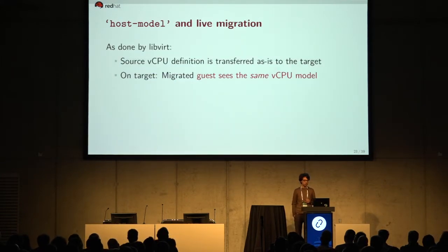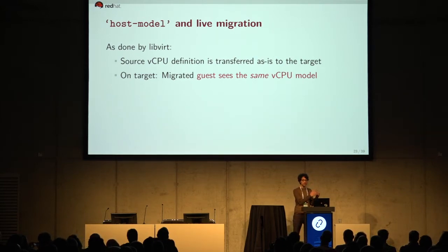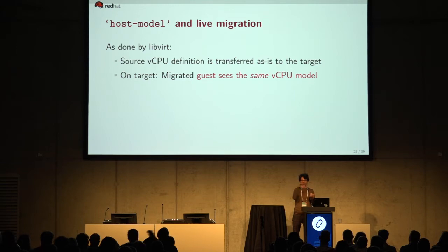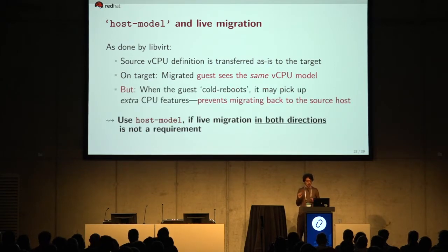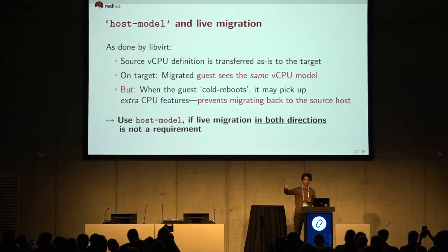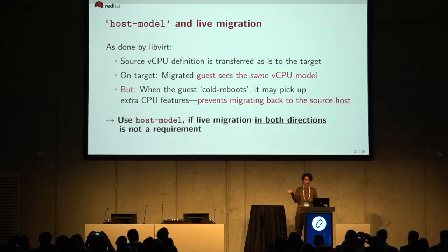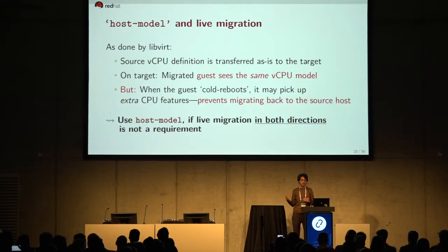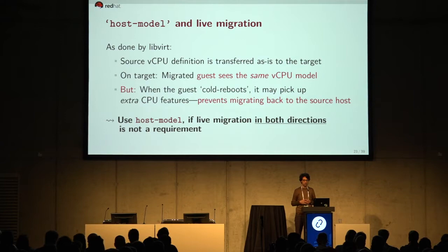The caveat with host model and live migration is that the source guest CPU definition is transferred as-is to the target host. Once migrated, the guest sees the identical CPU it saw on the source host, regardless of the target's capabilities. However, when the guest cold reboots — meaning you do an explicit stop followed by a start — it can pick up extra CPU features from a newer processor on the target. This would prevent you from migrating back to the original source, so if live migration in both directions is an absolute requirement, host model may not be the best option.